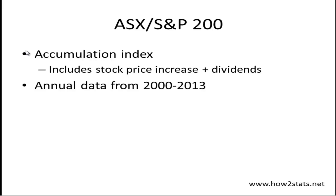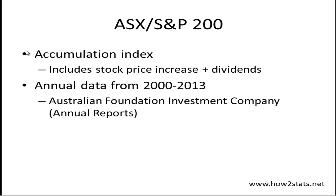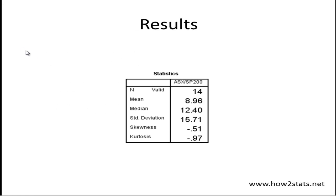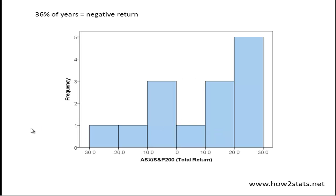I also looked at the S&P/ASX 200, which is the Australian Stock Market Index, using the Accumulation Index which includes stock price increases plus dividends. I only had data from 2000 to 2013. Based on those years, the average stock market return is 8.96%, but the median is again much larger at 12.40% — much closer to what you get on the S&P 500. And here again there's a large standard deviation of 15.71% and negative skewness, suggesting a non-normally distributed distribution. The distribution shows that 36% of years are associated with a negative return.